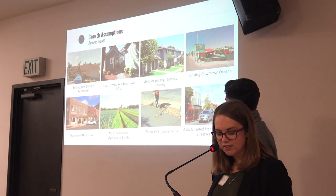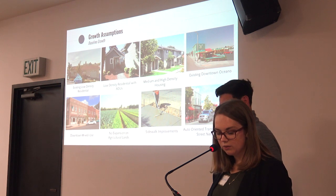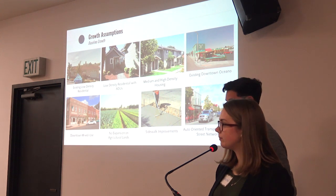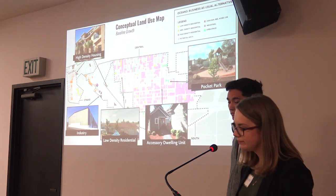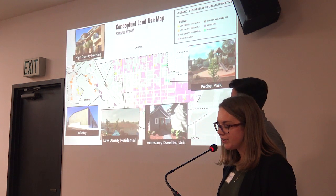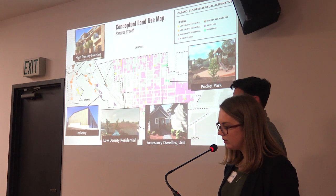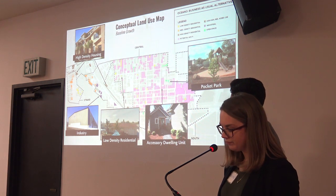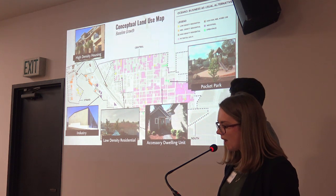Furthermore, the existing auto-oriented circulation network is largely maintained with the introduction of sidewalk improvements as vacant land is developed. Under this alternative, land uses range from low to high-density residential, potential ADU areas, mixed-use, industrial, and open space. They are illustrated and indicated in the map as follows.